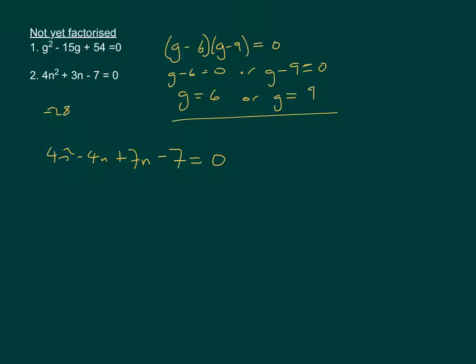We're then going to factorise these two to get the common factor. So we'll take out 4n, and we can take out 7 of the other ones. This one's going to leave us with n minus 1. If we take 7 out of the other one, we'll have n minus 1 again. So in brackets, we'll have 4n plus 7 and n minus 1.